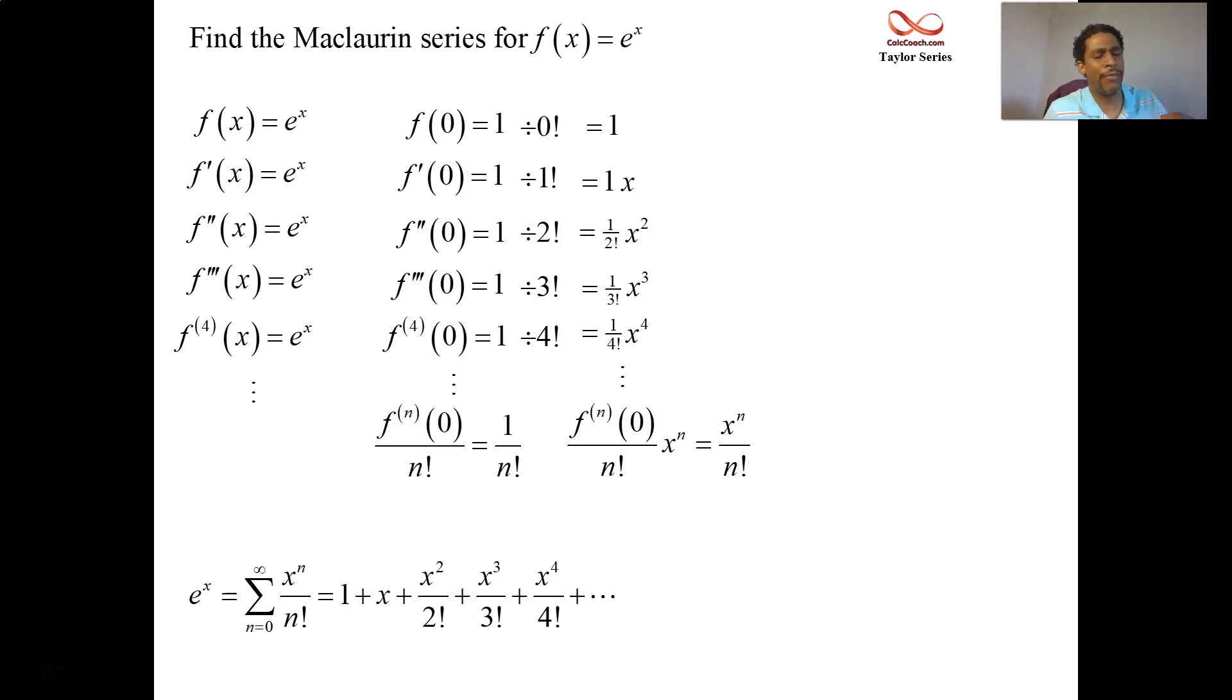Now we're interested in saying what x's make this converge. I mean, you know, it makes no sense just to say this is the power series without saying what x's it is valid for. We know the function has a domain of all real numbers. But is it possible that there are some x's that'll make this series diverge? We have to throw them out if that's the case.